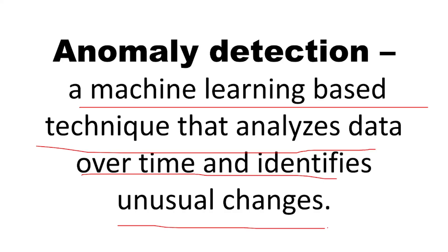For example, in hospitals in the ICU, they have a pulse rate machine. Immediately after the pulse goes down — that is an unusual change — a beep sound alerts the nurse that something dangerous is going to happen. So anomaly detection is one of the machine learning techniques.